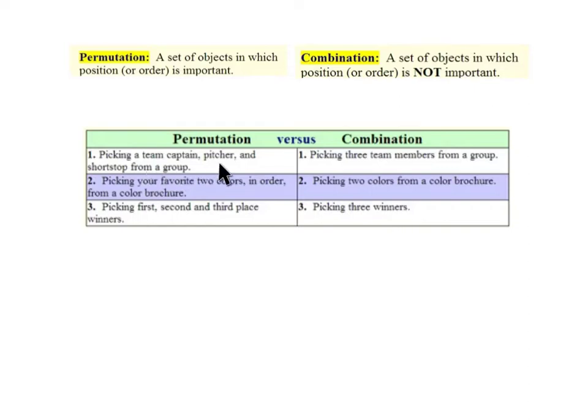Here are some examples of something that would be a permutation versus a combination. Picking a team captain, pitcher, shortstop, individual roles versus three members from a group, the order doesn't matter. Picking your favorite two colors in order from a brochure versus picking two colors, any two colors. First, second, third place, or three winners.